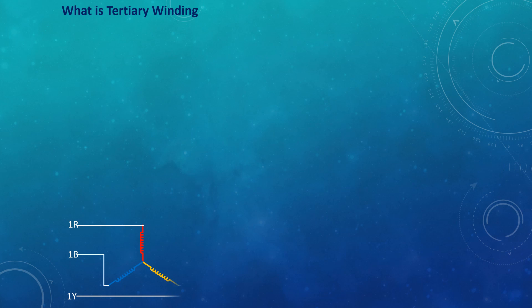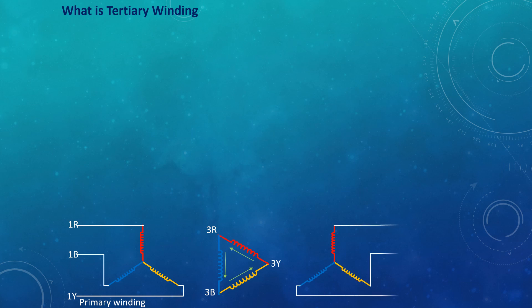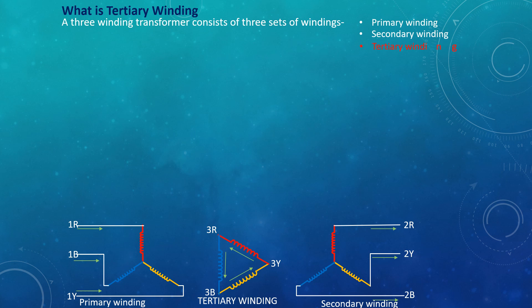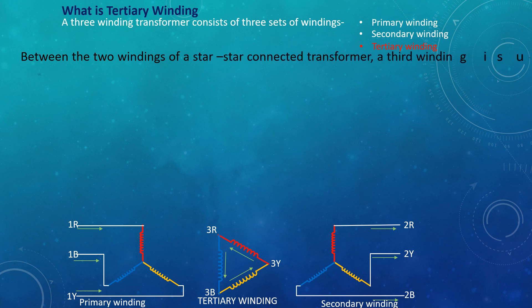What is the tertiary winding? A three-winding transformer consists of three sets of windings: primary windings, secondary windings, and tertiary windings. Between the two windings of a star-star connected transformer, a third winding is used, which is known as the tertiary winding.